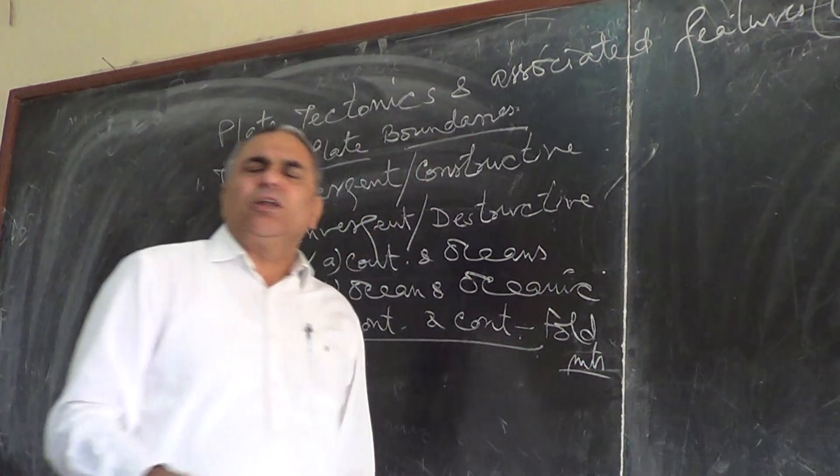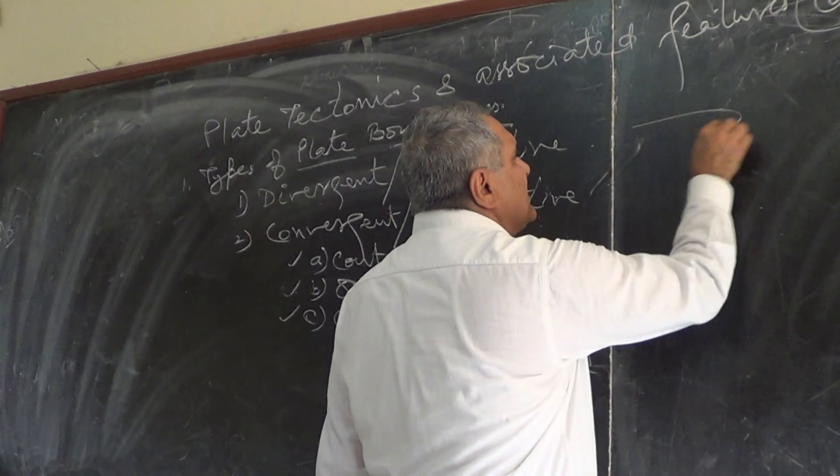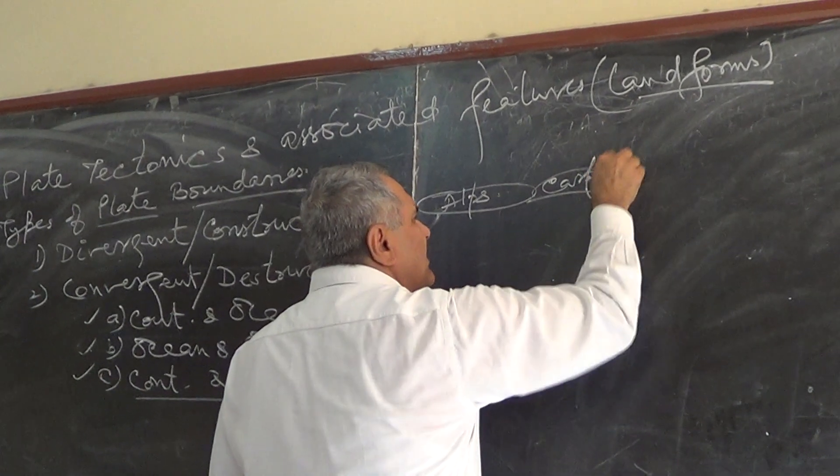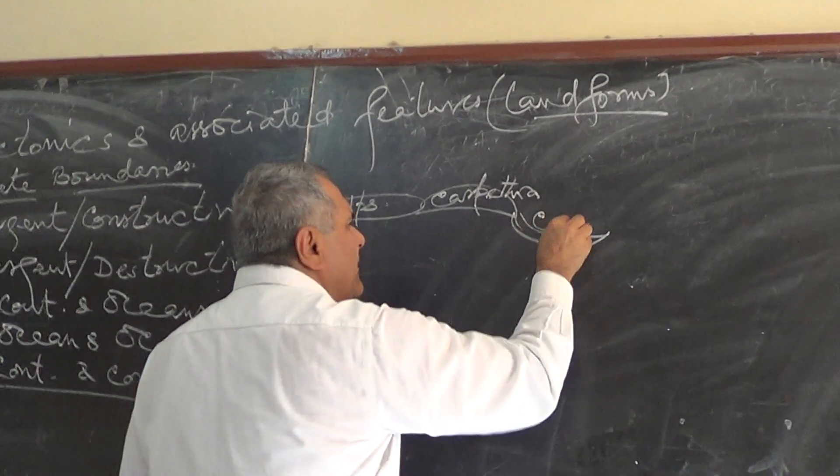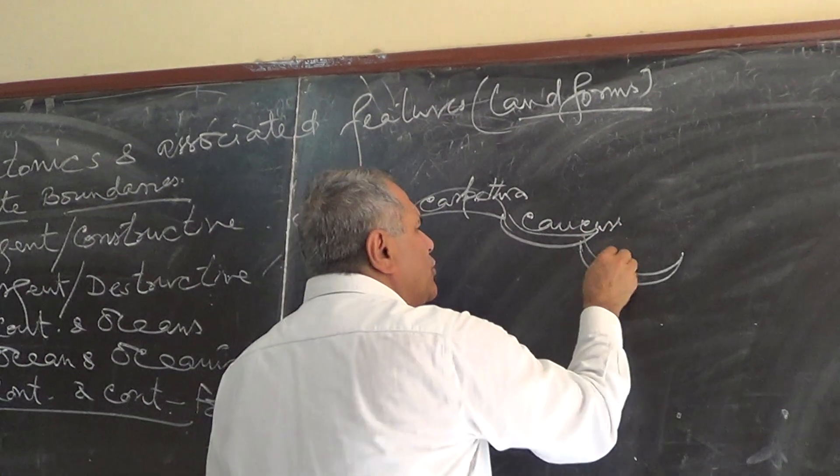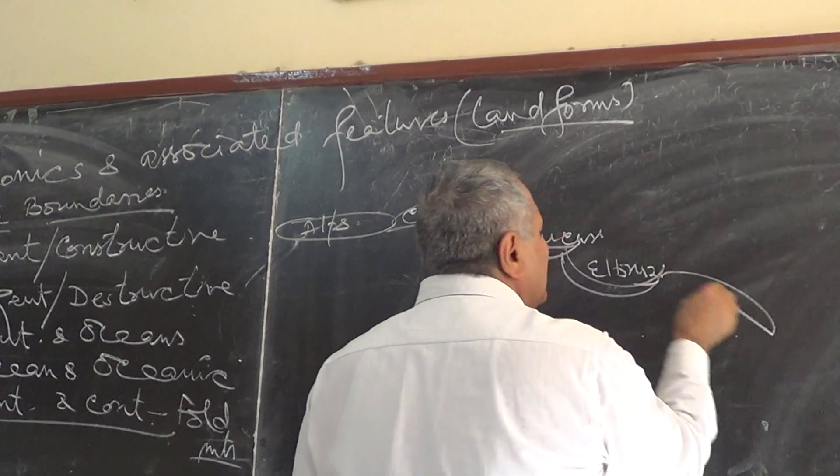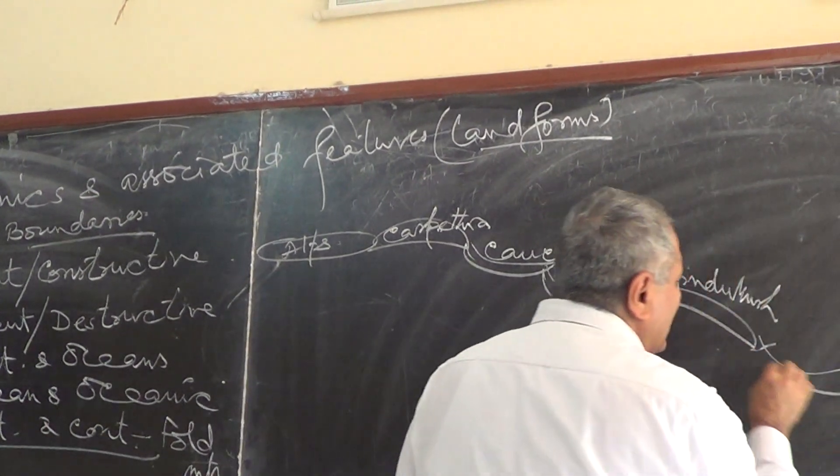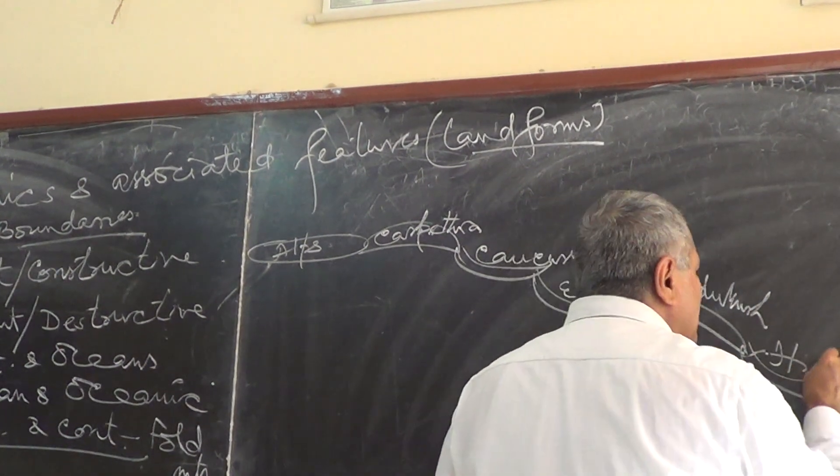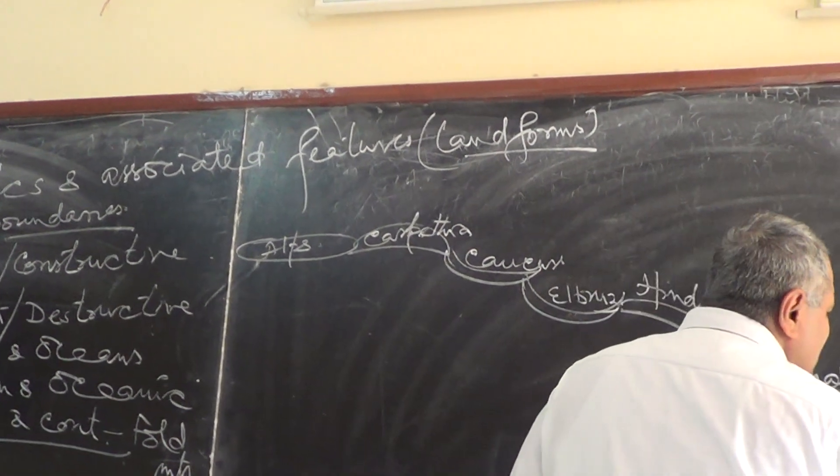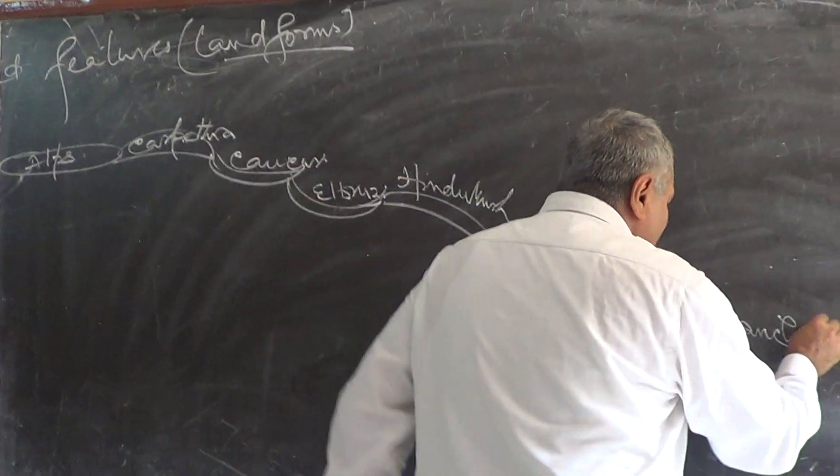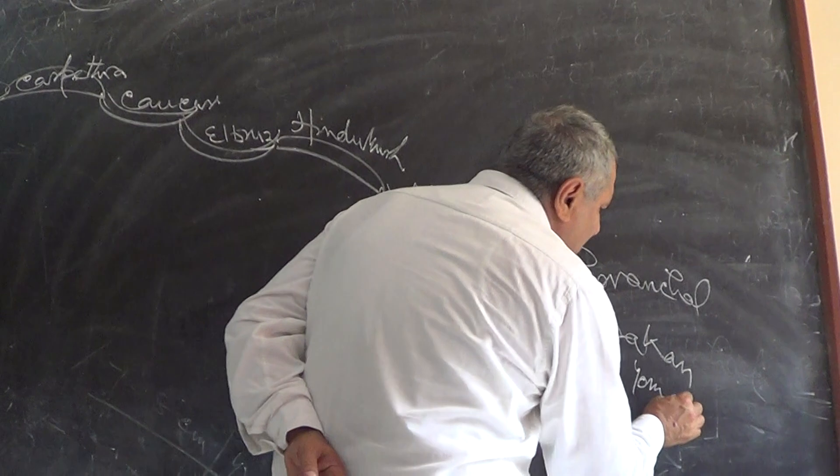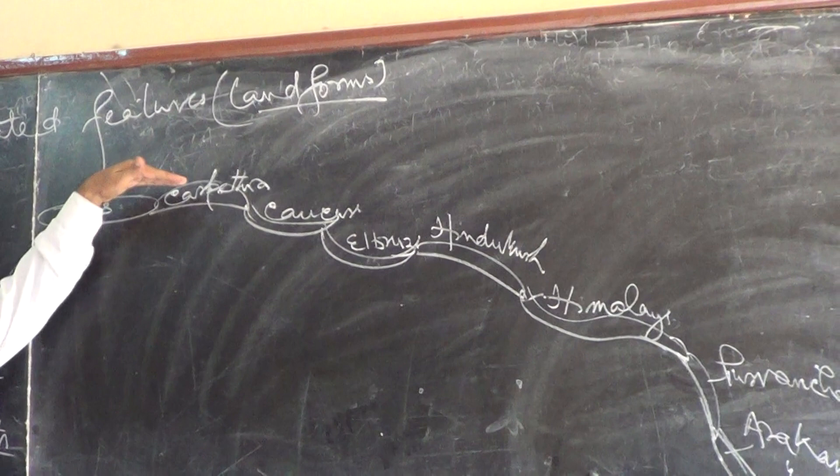I wanted to give you one of the longest chain of fold mountains. If I say this is the Alps, then we have the Carpathian, then we have the Caucasus, then we have the Elbrus, then we have the Hindu Kush. This is the Himalayan system and in continuity it is Arakan mountains. Arakan Yoma. Yoma means in Burman language mountain. You can see such a long continuous mountain range. It is a plate boundary.